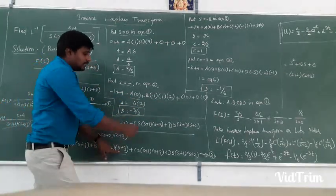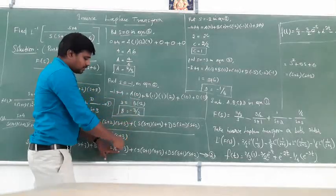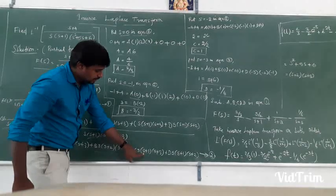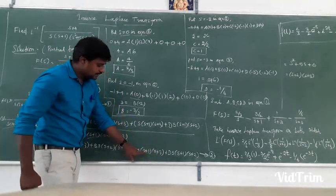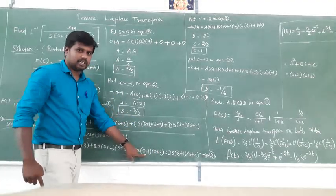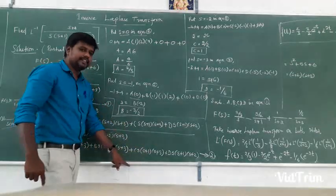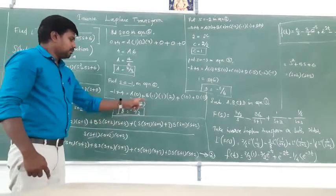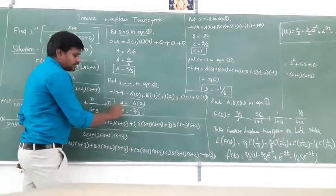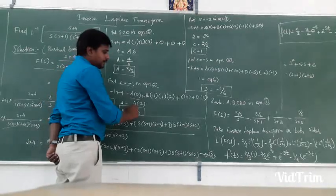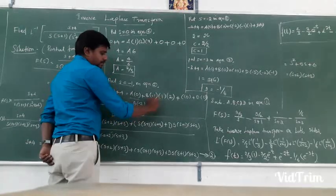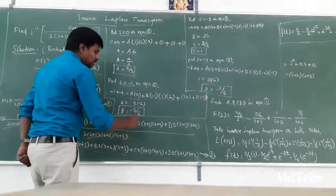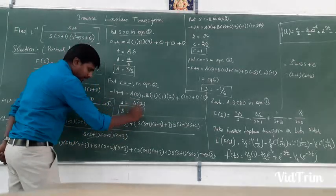Plus B into minus 1. S value is minus 1. Plus into S plus 2, S value is minus 1, so minus 1 plus 2 is plus 1. Plus into S plus 3, S value minus 1 plus 3 is plus 2. So the left side is minus 1 plus 4 equals 3. B into plus 1 into minus 1 is minus 1, into 2 is minus 2. So B equals minus 3 divided by minus 2.